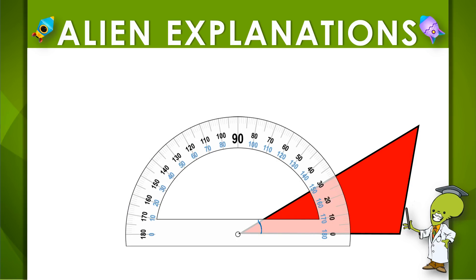Now from 0 I'm going to go up until I see the other leg cross itself. So right here. So it looks like the measure of this angle would be 30 degrees. 0 to 30.